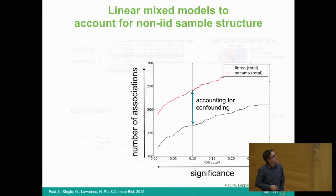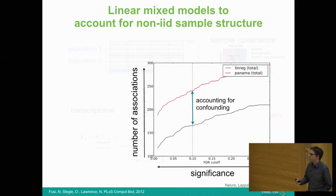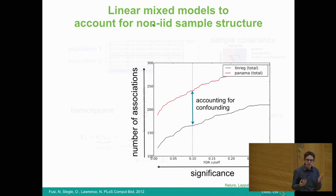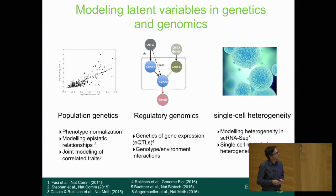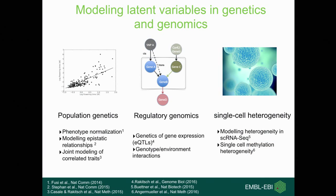These approaches worked out quite well — we increased power. One example from a thousand genomes paper shows the number of genes for which we can ascertain a genetic basis, either with or without accounting for confounding factors, and there's quite a bit of mileage in doing so. That research theme has stayed with us: accounting for non-IID sample structures and latent variables in population genetics and regulatory genomics, including methods linking variants in the genome to downstream pathway-level consequences.